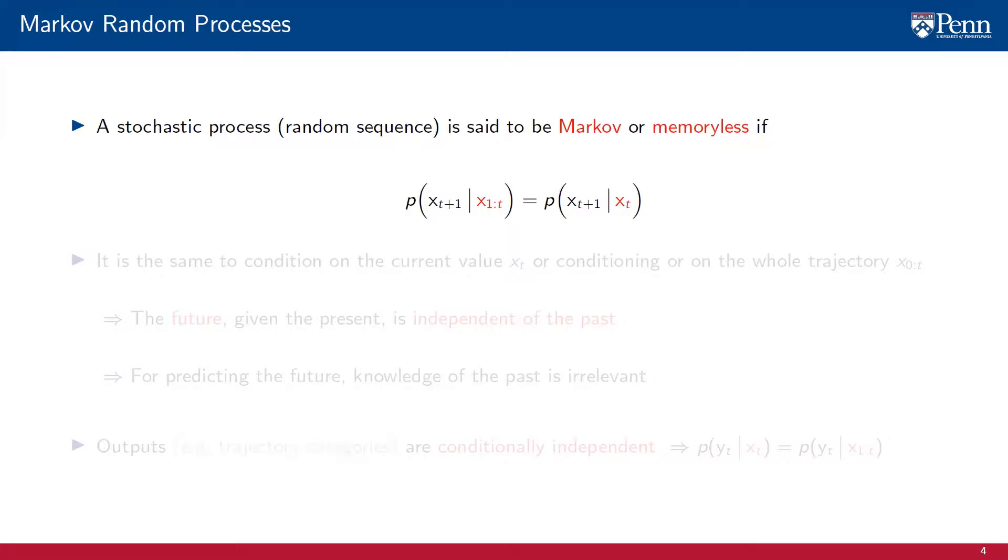The classical tool to study memory in time sequences is the Markov random process. We say stochastic processes are Markov or memoryless if the conditional probability of observing a certain value at time t plus 1, given that we know the complete history of the process from time 1 to t, is the same conditional probability of knowing only the state at time t. More succinctly, the process is Markov if it is the same to condition on the current value x of t or to condition on the whole trajectory of the process.